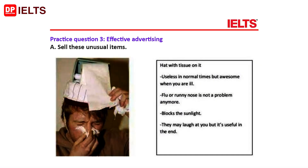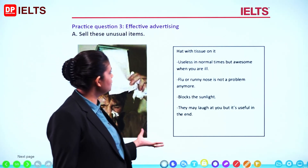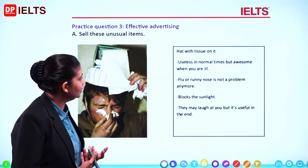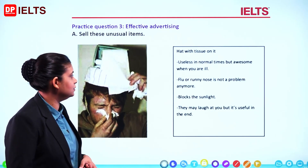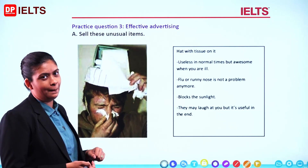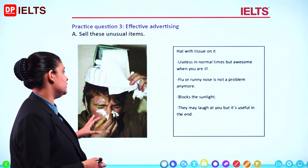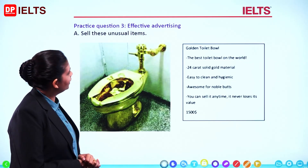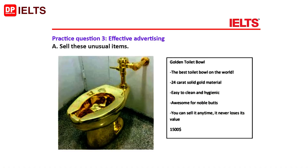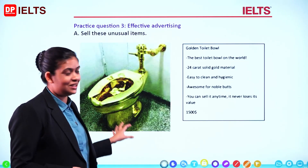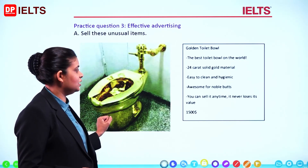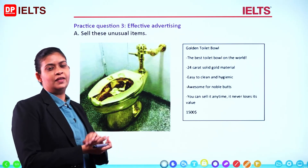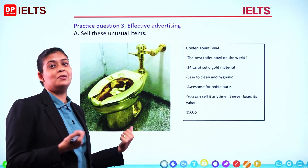Practice question 3: effective advertising. Sell these unusual items. First, a hat with tissue on it — make this unusual product a cut above. Try to sell it: 'Useless in normal times, but awesome when you're ill. Flu or runny nose is not a problem anymore. Blocks the sunlight — they may laugh at you, but it's useful in the end.' The next one: golden toilet bowl. 'Best toilet bowl in the world. 24-carat solid gold material. Easy to clean and hygienic. Awesome for noble butts. You can sell it anytime — it never loses its value.' $1,500.